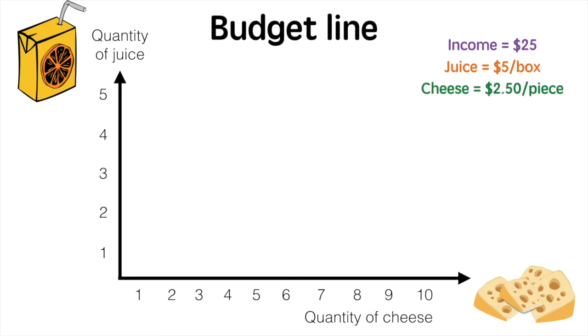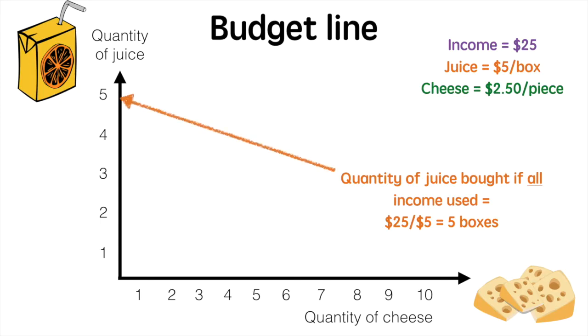If the consumer spends all of their income on juice, they can buy $25 divided by $5 worth of juice, which is 5 boxes. We mark that on the y-axis.